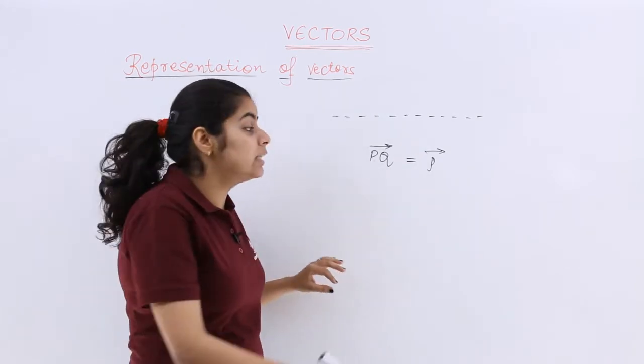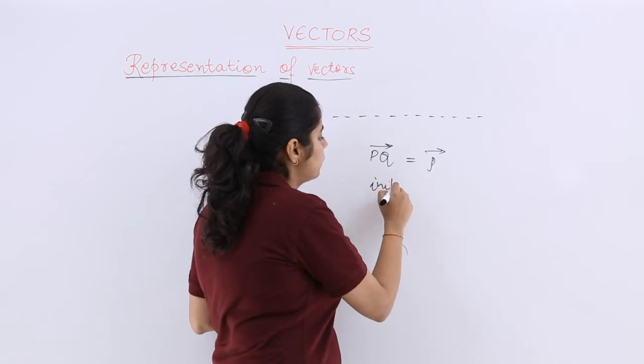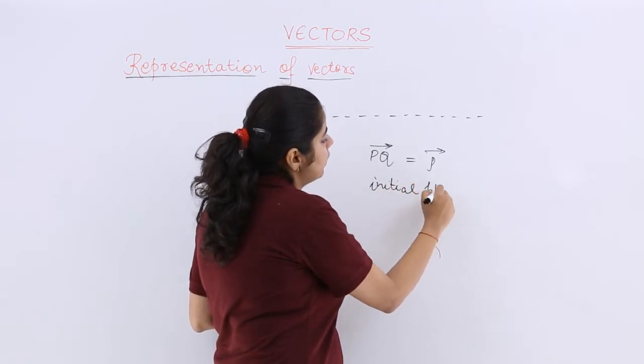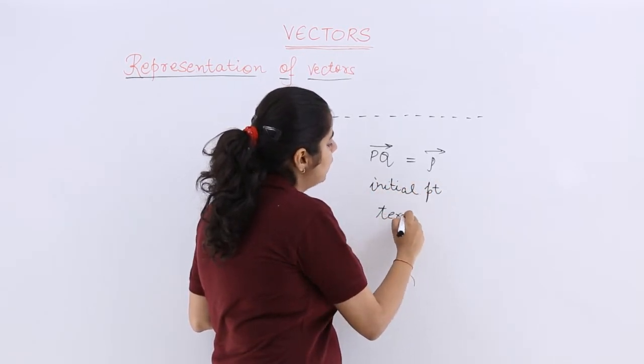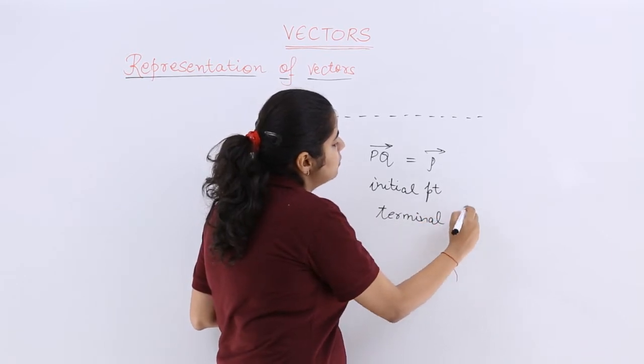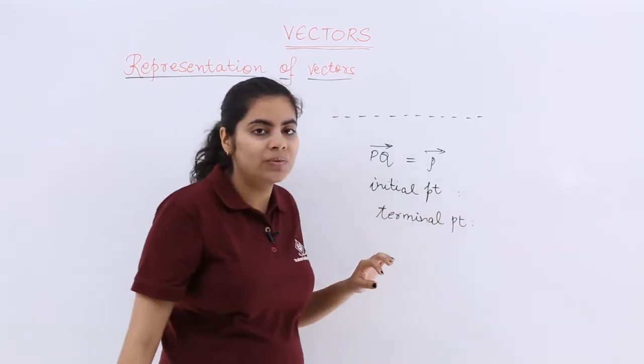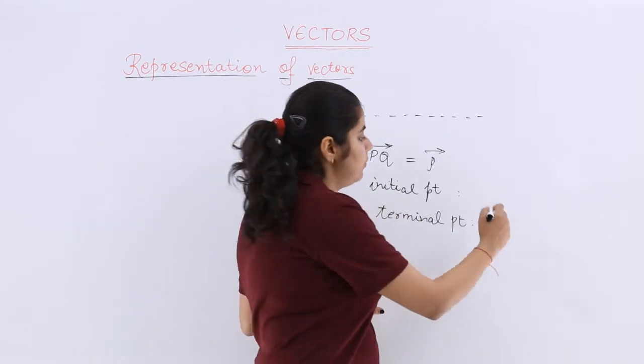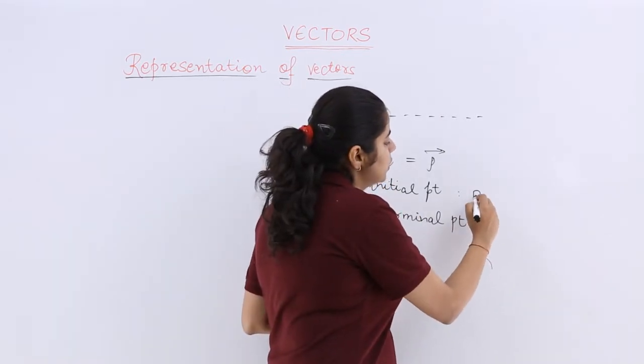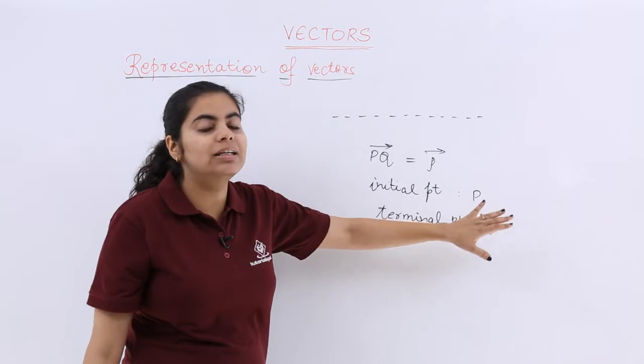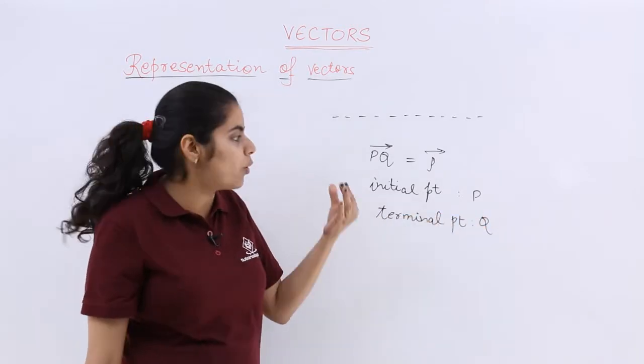The PQ means the initial point as well as the final point, which is known as the terminal point, is very important to know. The initial point is P and the terminal point is Q, meaning the vector direction or sense is from P to Q.